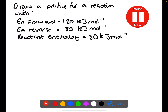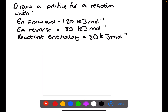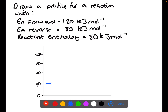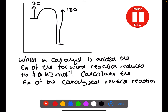Pause the video now and try this question. Here we are drawing a reaction profile with an activation energy for the forward reaction of 120, for the reverse reaction of 80, and a reactant enthalpy of 50. First put in the scale, then place the reactants at 50. An activation energy of 120 for the forward reaction takes the top to 170. The reverse activation energy is 80, so from 170 we take off 80, bringing the products down to 90.